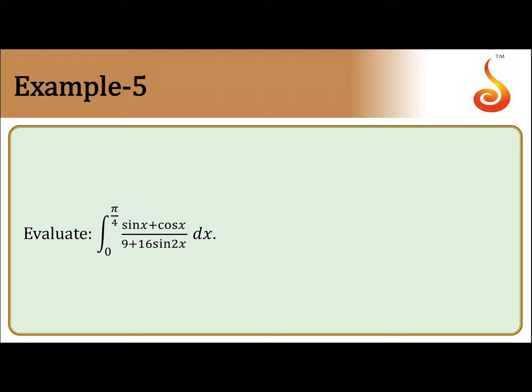Plus 16 sin 2x. So what we do here is sin x minus cos x equals t. Squaring both sides, 1 minus sin 2x equals t squared, so we get 1 minus t squared equals sin 2x.